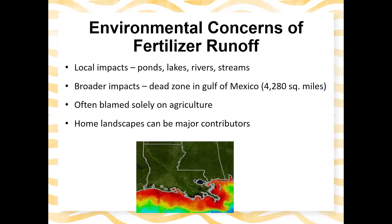The broader impacts include the dead zone in the Gulf of Mexico, which ebbs and flows with the seasons. Essentially, there's an area in the Gulf where oxygen levels are so low that aquatic organisms are heavily impacted. This is often blamed solely on agriculture, but home landscapes can definitely be major contributors. A local USDA staff member's master's thesis on sampling runoff from suburban versus agricultural areas actually found much higher concentrations of nitrogen and phosphorus from suburban landscapes than from agricultural ones.